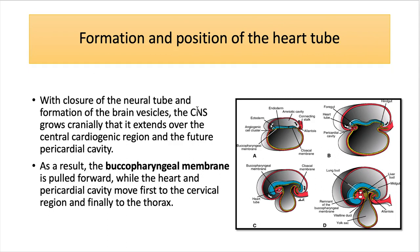With the closure of the neural tube and formation of the brain vesicle, the central nervous system grows cranially and extends over the central cardiogenic region and the future pericardial cavity. This is the cephalic and caudal folding of the embryo. As a result, the buccopharyngeal membrane is pulled forward, while the heart and the pericardial cavity move first to the cervical region, then to the thorax.